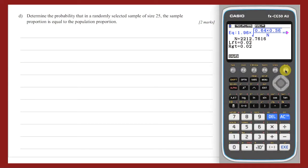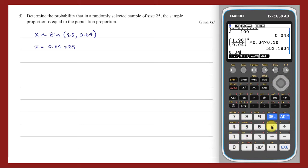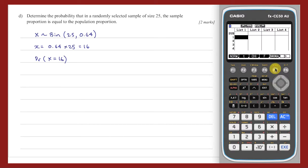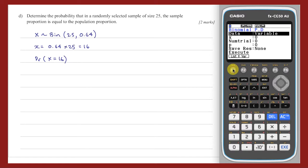Part D. This part of the question involves modelling a sample size 25 with a binomial distribution with n equals 25 and p equals 0.64. The probability that p hat, the sample proportion, equals p is equivalent to the probability that the sample count of x equals 25 times 0.64, and this is equal to 16. The probability that x equals 16 can be calculated using the distribution menu found in the statistics app of the CG50. Select the binomial distribution by pressing F5 and perform a point calculation by pressing F1. With data set as variable, enter x as 16. Enter the number of trials n as 25 and p as 0.64. Press execute to find the probability required.